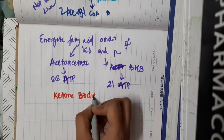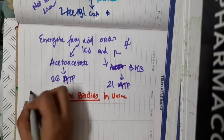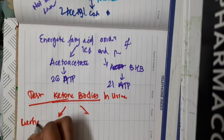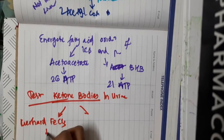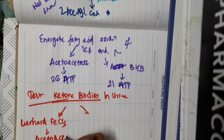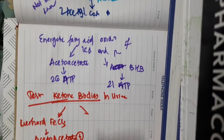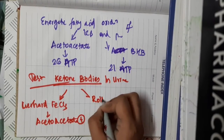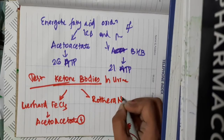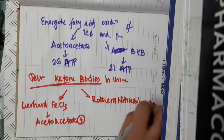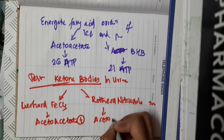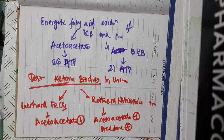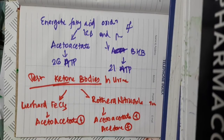Ketone bodies are seen in urine. To test ketone bodies in urine, we have two major tests. Gerhardt's ferric chloride test is positive for acetoacetate. Rothera's nitroprusside test is positive for both acetoacetate and acetone.